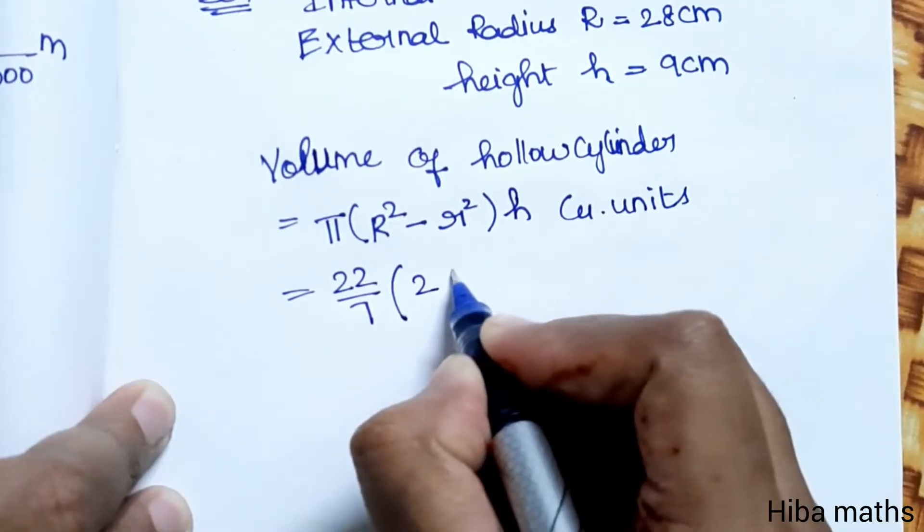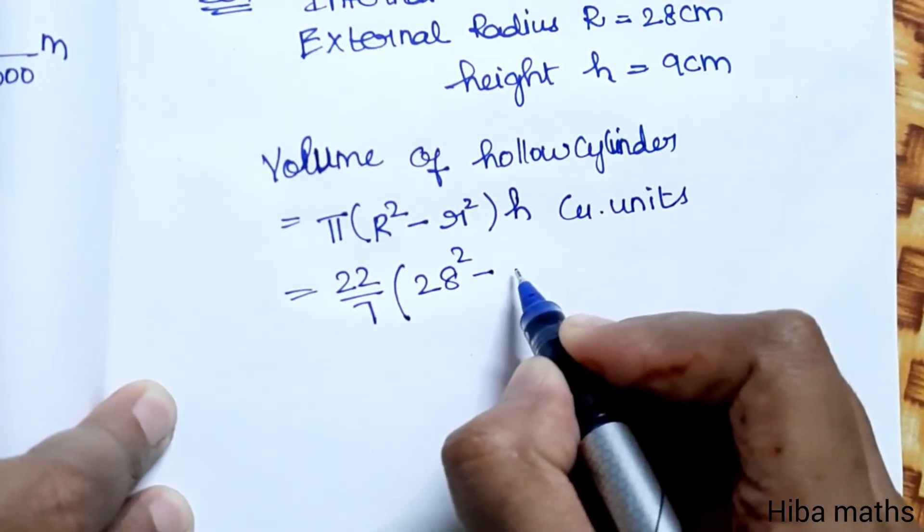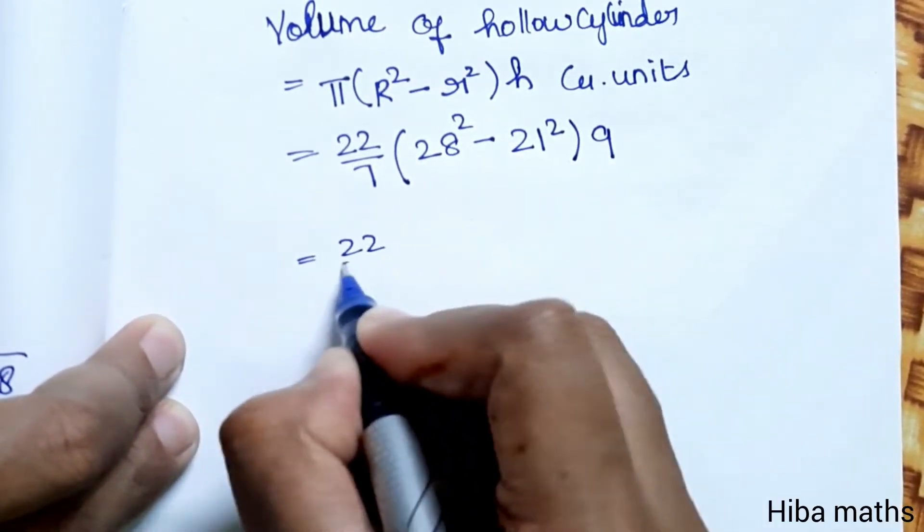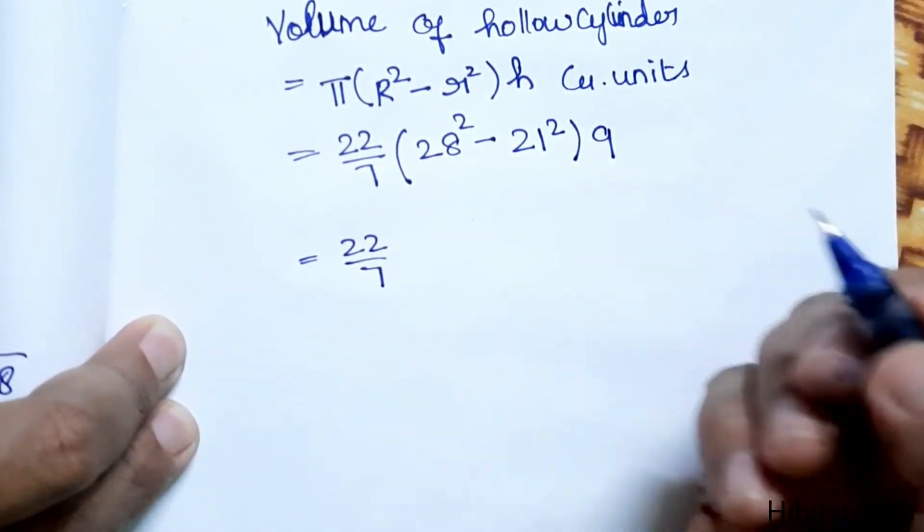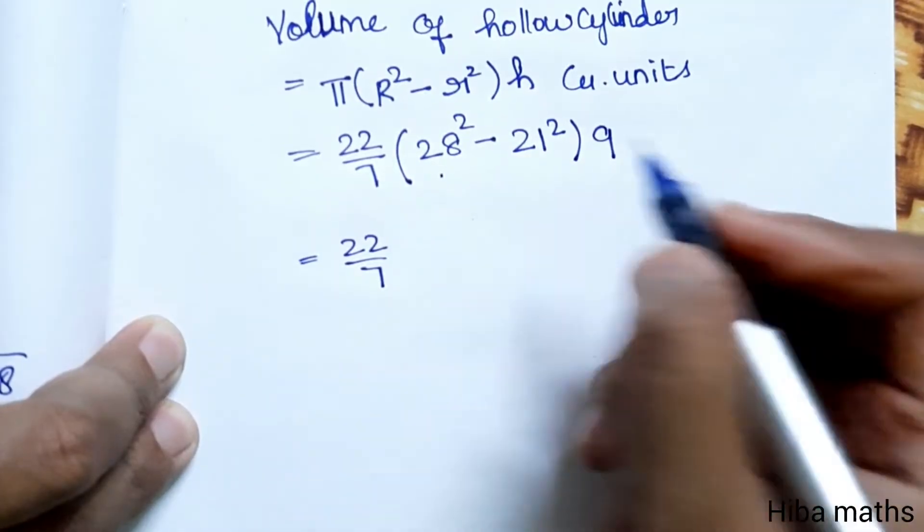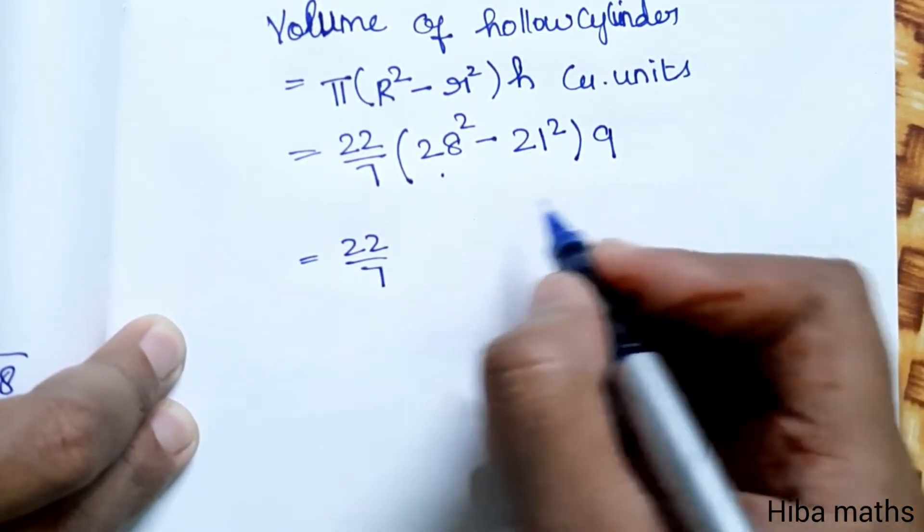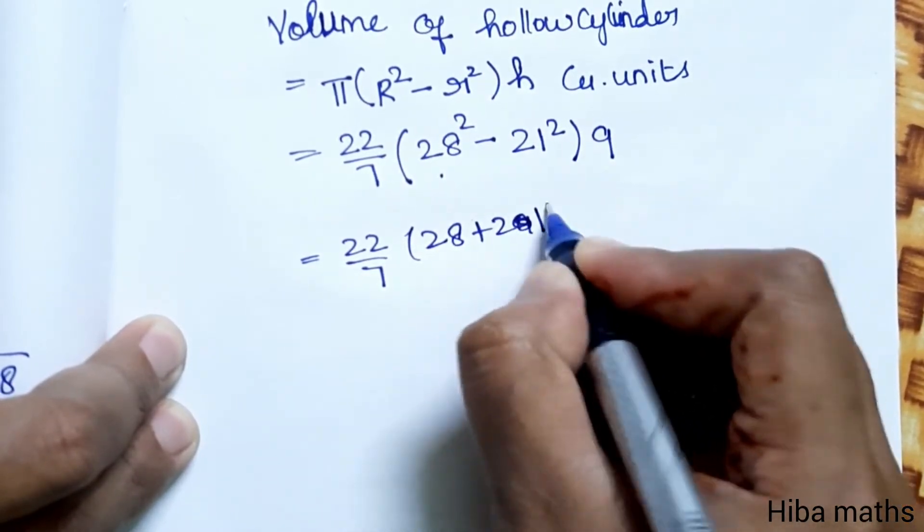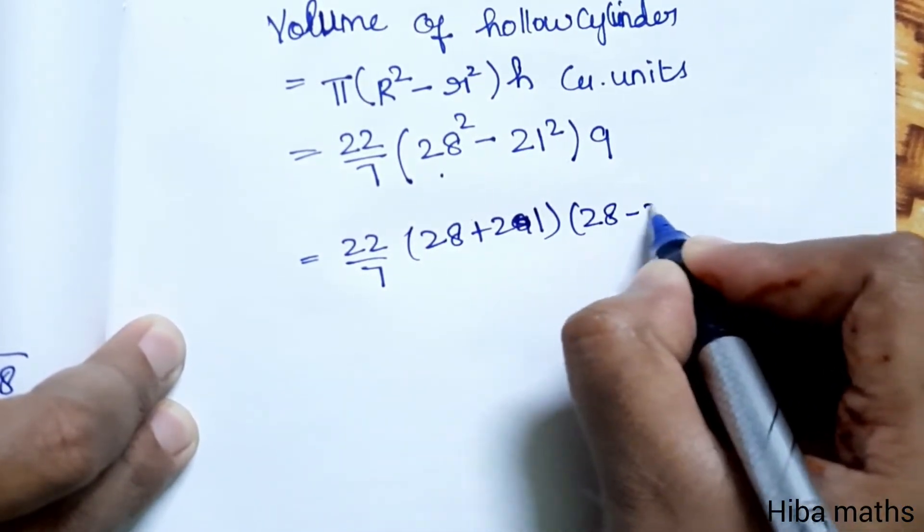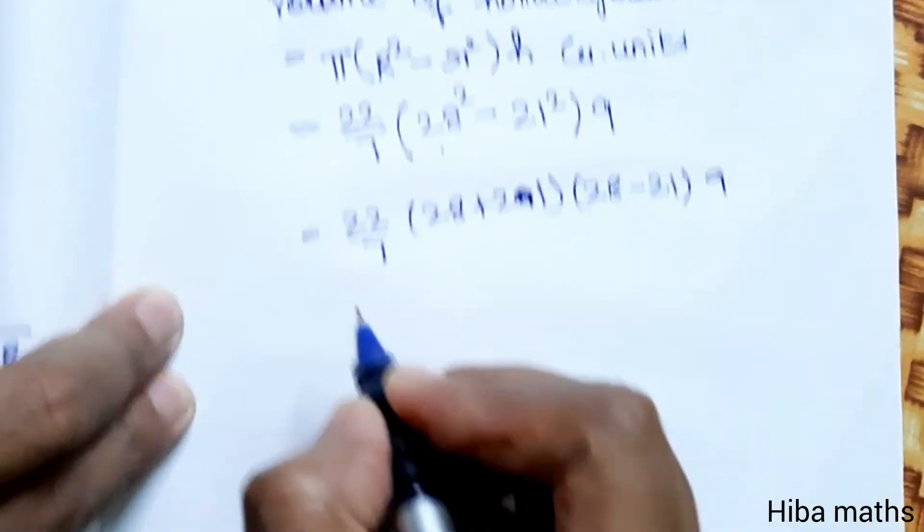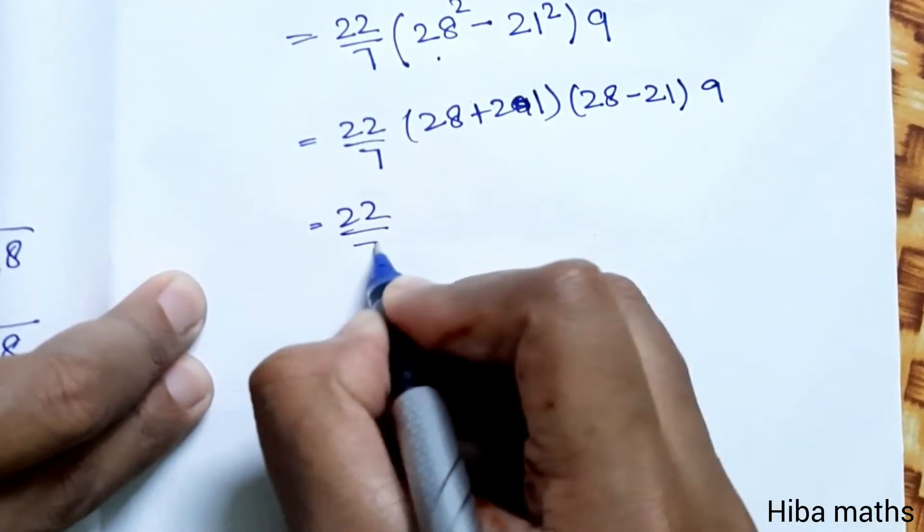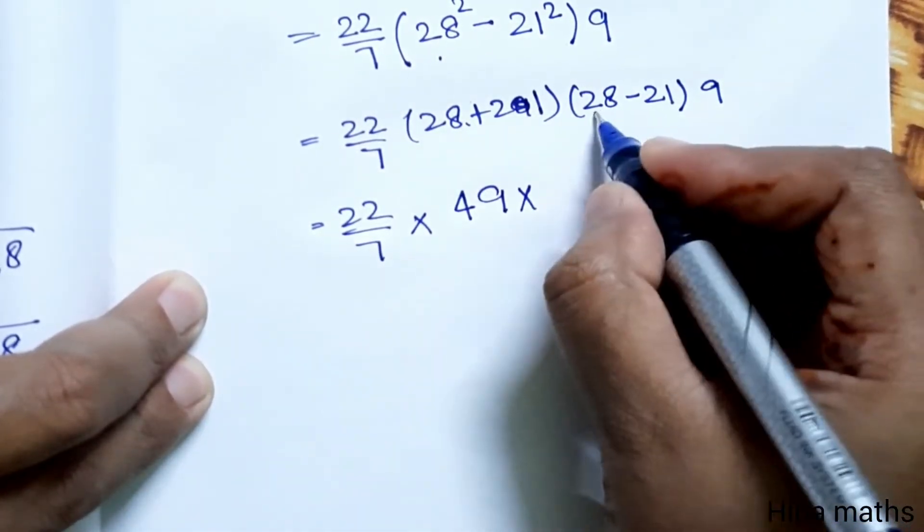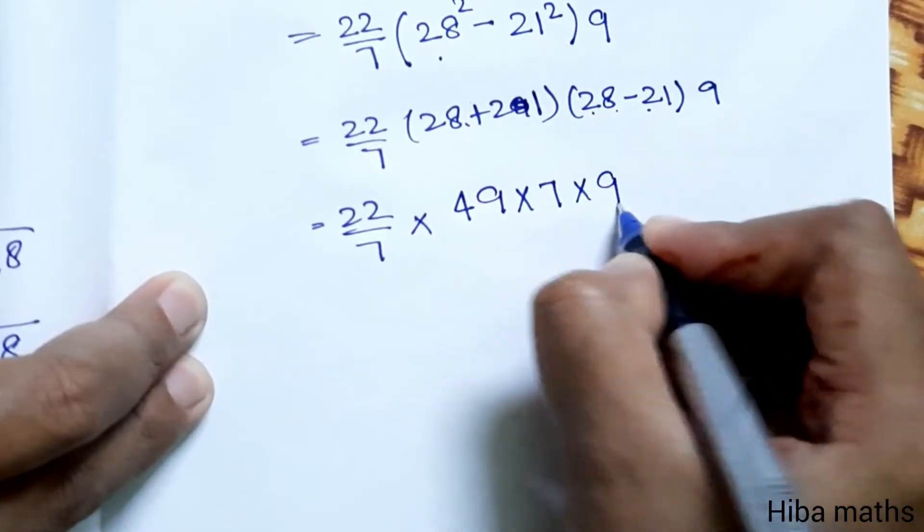Capital R squared is 28 squared minus 21 squared into 9. This is the a squared minus b squared format, so (a + b)(a - b) equals (28 + 21)(28 - 21) into 9, which gives 22/7 times 49 times 7 times 9.